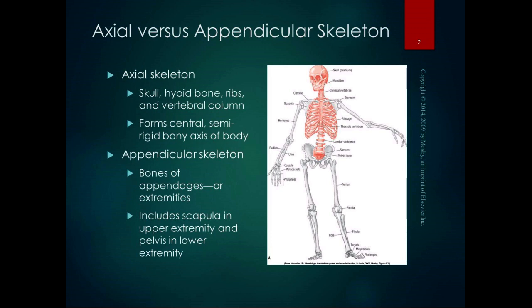The appendicular skeleton is the bones of the appendages or extremities. It includes the scapula and the clavicle in the upper extremity, and the pelvis in the lower extremity. A lot of the different joints we're going to talk about in this class are in the appendicular skeleton, but we will also talk about joints in the axial skeleton.